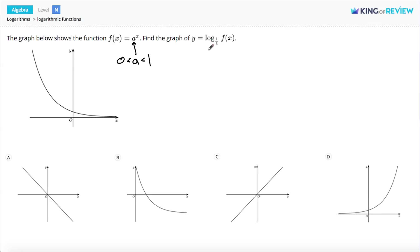y equals the log base 1 fifth of f of x. Let's rewrite that as the log base 1 fifth of a to the x, since we know f of x equals a to the x. Now there are a couple things we could do to make this a little bit easier to understand what it would look like.